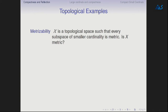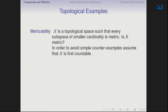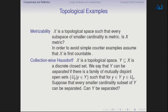Metrizability: take a topological space where every subspace of smaller cardinality is metrizable — is X itself metrizable? In order to avoid simple counterexamples, assume that X is first countable. You could have a space where every smaller cardinality subspace is discrete but the whole space is very non-metrizable. So the issue is: assuming X is first countable, can we get metrizability from below?